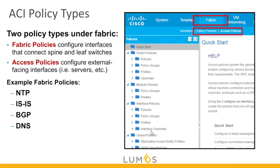Under Fabric, there are two different types of policies. Fabric policies configure interfaces that connect the spine and leaves. Access policies configure external facing interfaces — the ones plugging into servers, virtual machine hypervisors, routers, load balancers, firewalls, etc. On the fabric side, we configure server policies such as NTP, ISIS, BGP timers, and DNS.